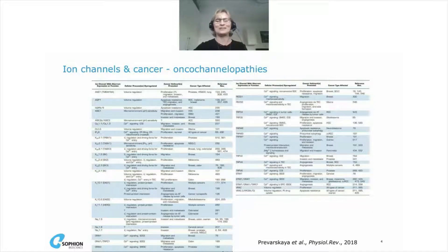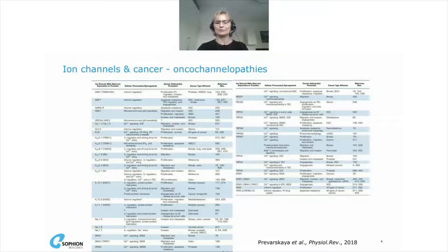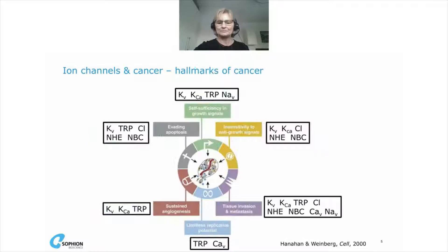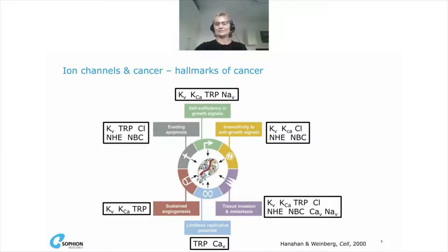You could all pick out your own favorite ion channel here, whether a potassium channel, sodium channel, or TRP channel, from this extensive list. Over the next few slides I'll describe some of the hallmarks of cancer and the ion channels implicated in those cellular processes. This figure gives an overview of the hallmarks of cancer and the ion channel families involved in each process — where usual cell characteristics become aberrant or abnormal.